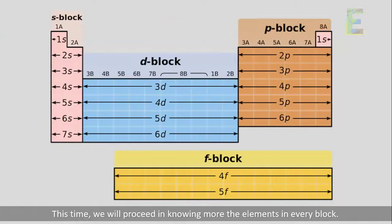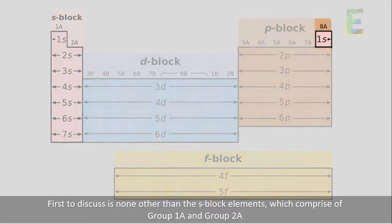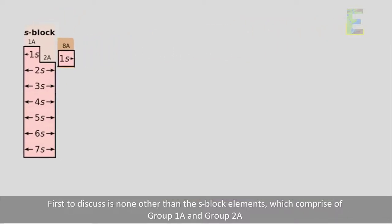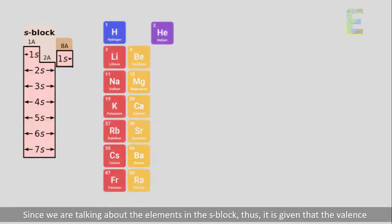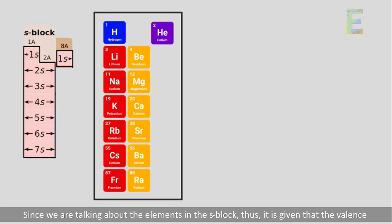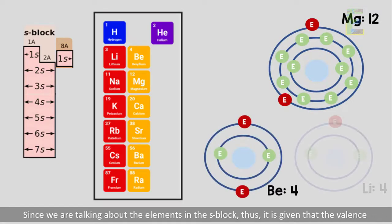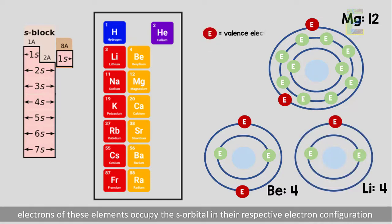We will now proceed in knowing more about the elements in every block. First to discuss is the S block elements, which comprise Group 1A and Group 2A. Since we are talking about the elements in the S block, it is given that the valence electrons of these elements occupy the S orbital in their respective electron configurations.